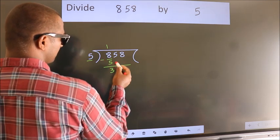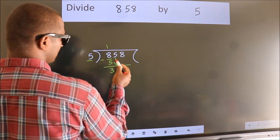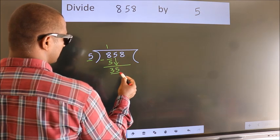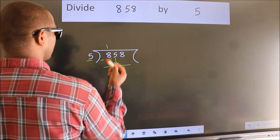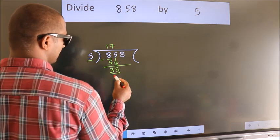After this, bring down the beside number. So 5 down, so 35. When do we get 35? In 5 table, 5 7s 35.